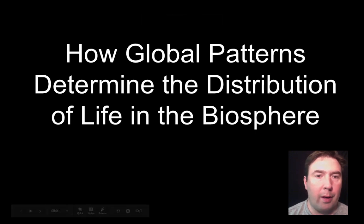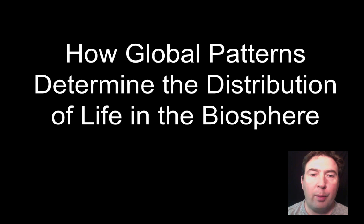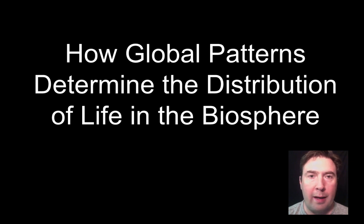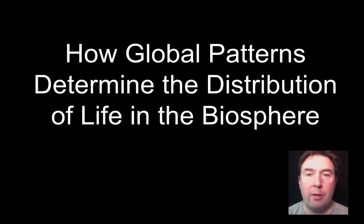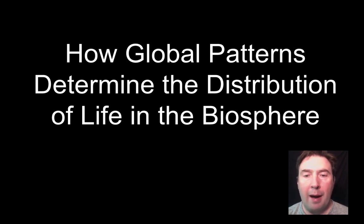Hello everyone, this is Mr. Matthew here and I'm going to talk about how global patterns determine the distribution of life in the biosphere. This is Learning Objectives 1-1 in Honors Biology, Unit 1, First Section or First Theme. In this video I'm going to talk about why we have four seasons, describe how the Earth's tilt leads to uneven heating of the Earth's surface, evaluate how that uneven heating drives the patterns of air and water circulation on the planet, and determine the biome of a given location based on temperature and precipitation patterns.